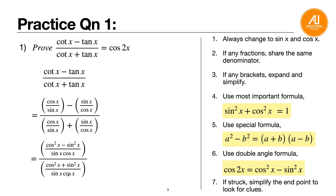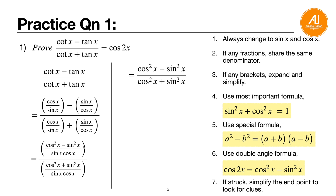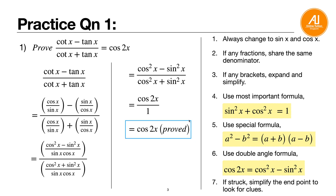The common denominator sine cosine cancels from top and bottom, leaving just the numerators: cosine squared x minus sine squared x over cosine squared plus sine squared. Since you're trying to reach a double angle, use tip six. Cosine squared x minus sine squared x equals cosine 2x. Cosine squared plus sine squared equals one. So the result is cosine 2x over one, giving the answer cosine 2x.